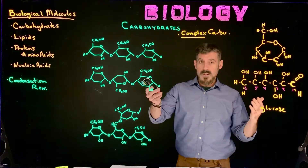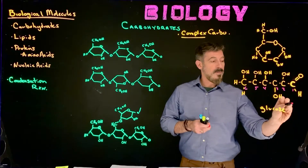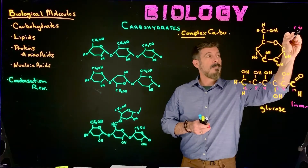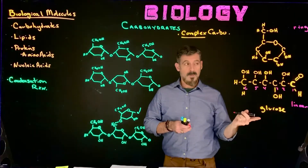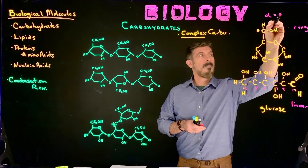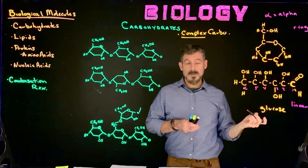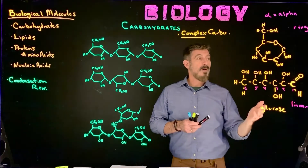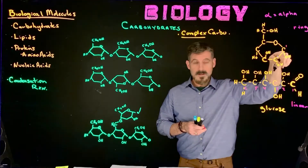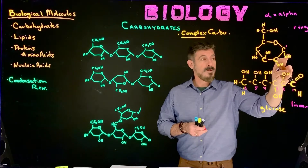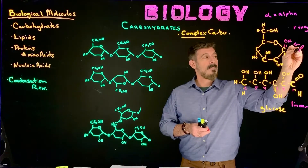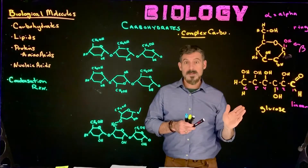Now, when we draw these chains, we typically don't draw it in this linear form. Typically we'll see it in this ring form. When we draw the ring form, there really are two types: there is an alpha glucose and there's a beta glucose. Alpha glucose is really focusing on the fact that the carbon number one OH group is down, versus the beta glucose, where that OH group is up. Otherwise it's the same.